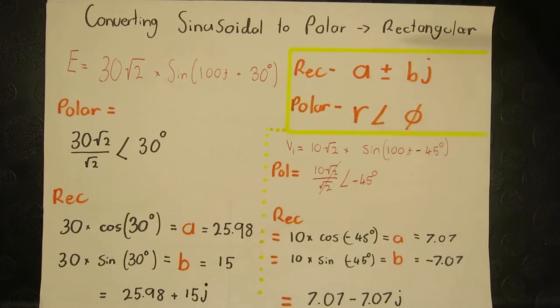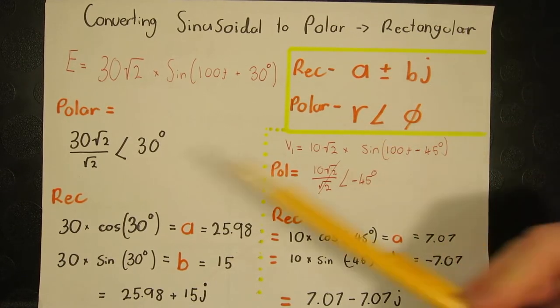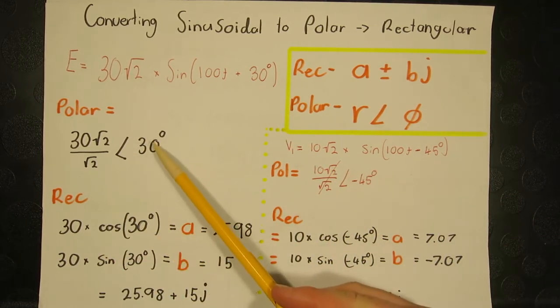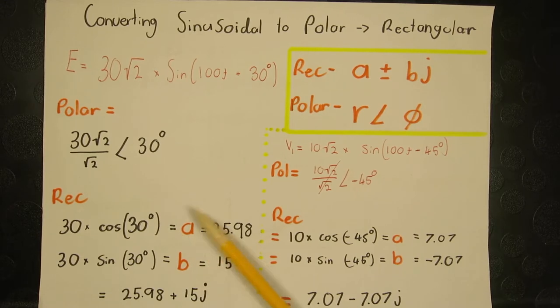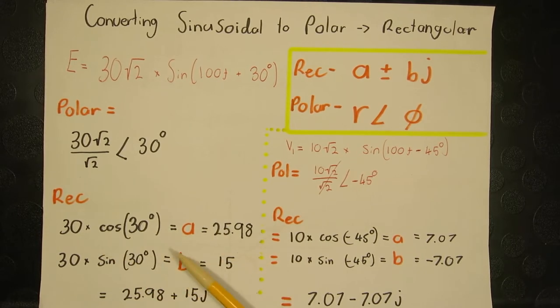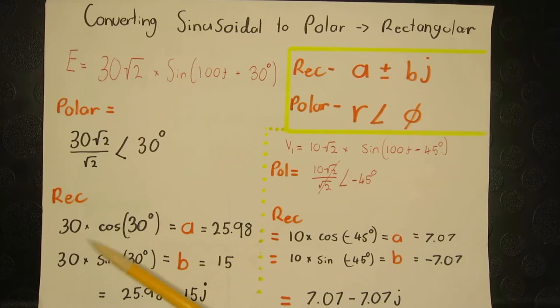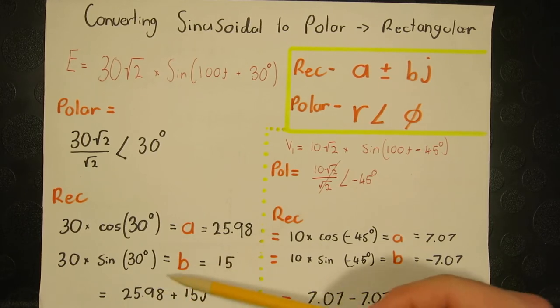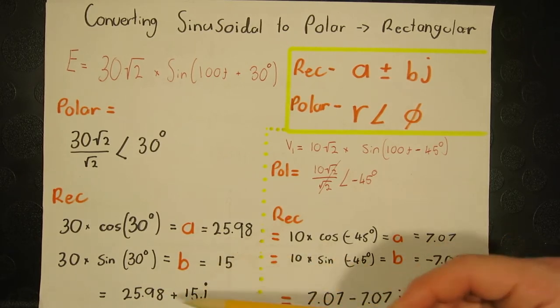Now, converting to a rectangular form will ease our calculation process. So, we extract the amplitude times cos of the angle phi, now this equals our real value. We do a similar process to find the imaginary value B, that is amplitude times sine of phi equals B. Now, when writing down the form, A is written normally, whereas B has a J, an imaginary value attached.